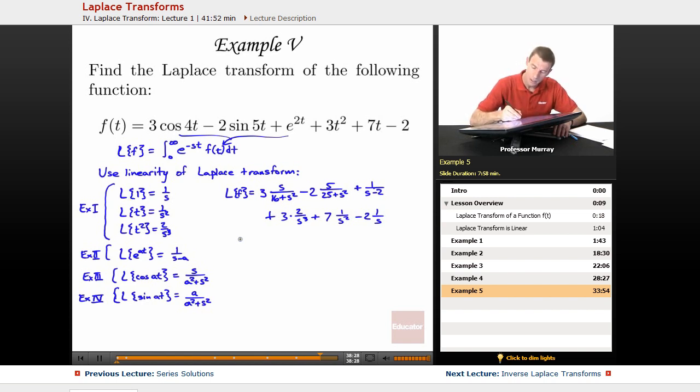So maybe I can clean that up a little bit. That's 3s over s squared plus 16, minus 2 times 5 is 10 over s squared plus 25, plus 1 over s minus 2, plus 3 times 2 is 6 over s cubed, plus 7 over s squared, minus 2 over s.